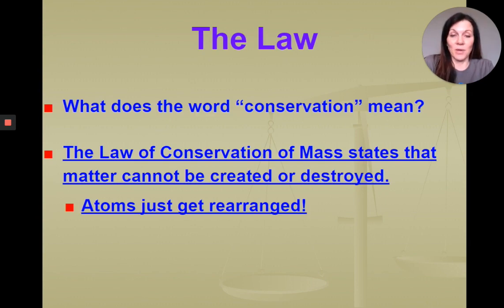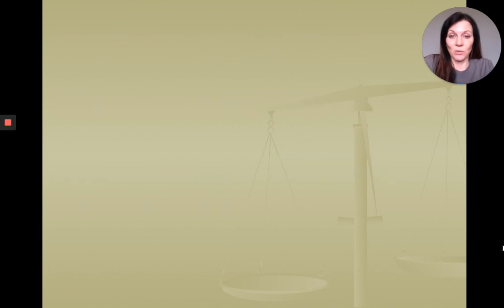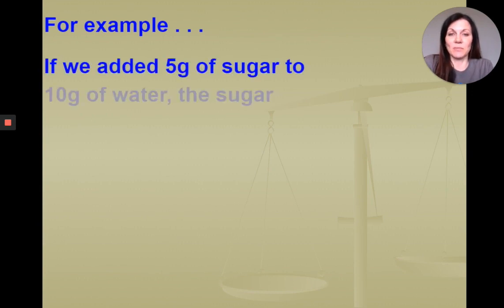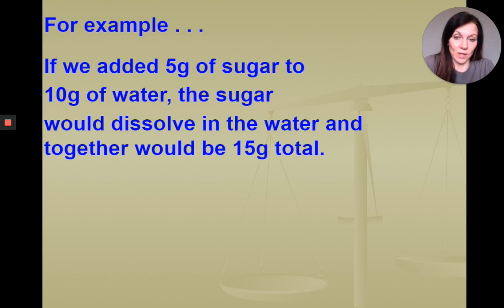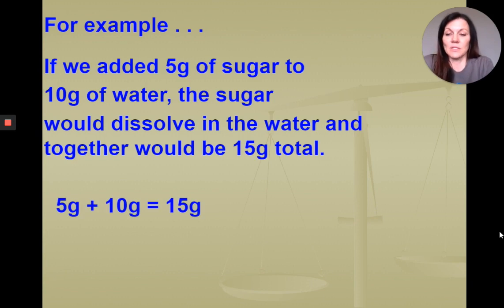The amount of matter that we have now is the same amount of matter that we've always had. The arrangement of atoms just continues to change through chemical reactions. For example, if you add five grams of sugar to 10 grams of water, the sugar would dissolve in the water and together create a product with a total of 15 grams. So five grams of sugar plus 10 grams of water would equal 15 grams.